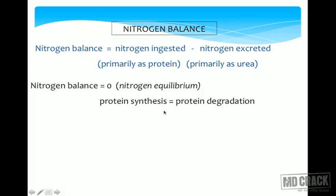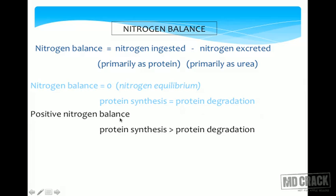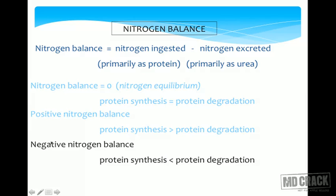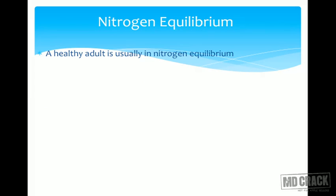Nitrogen balance is said to be zero — that is, the person is in nitrogen equilibrium — if protein synthesis equals protein degradation. Somebody is in positive nitrogen balance when protein synthesis is more than protein degradation, and in negative nitrogen balance when protein synthesis is less than protein degradation. From an MCQ point of view: positive means protein synthesis is taking place, negative means protein degradation is taking place.